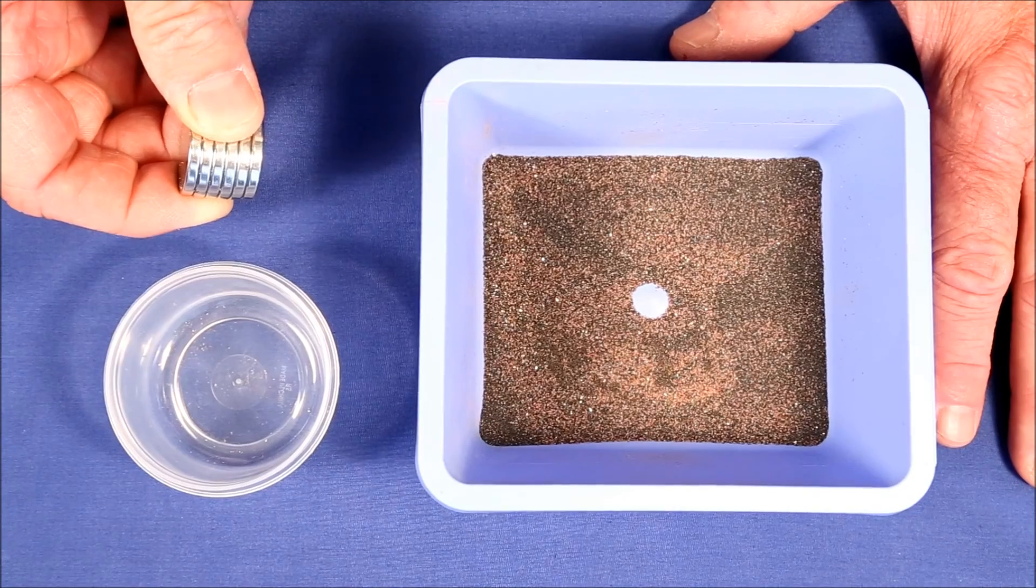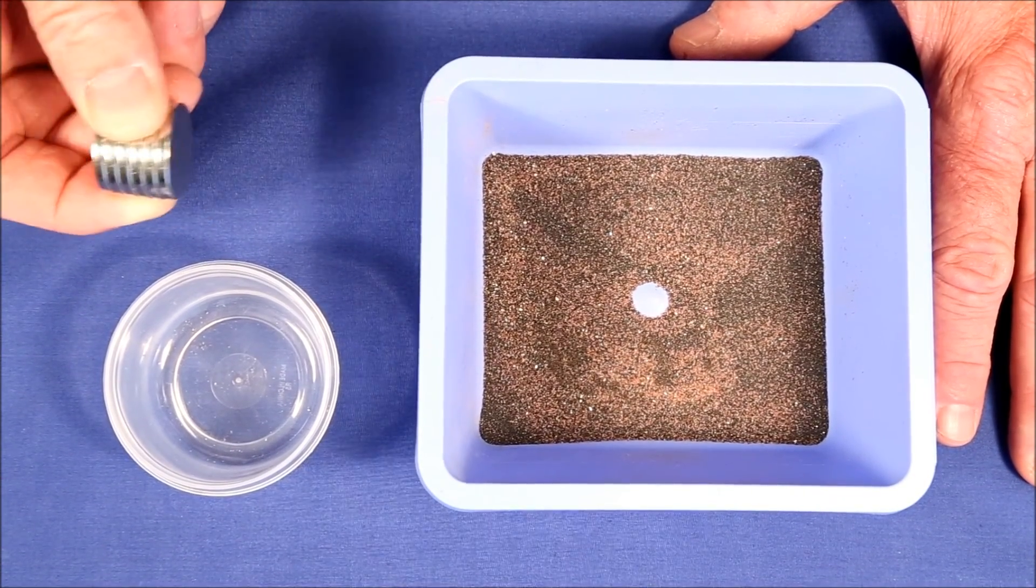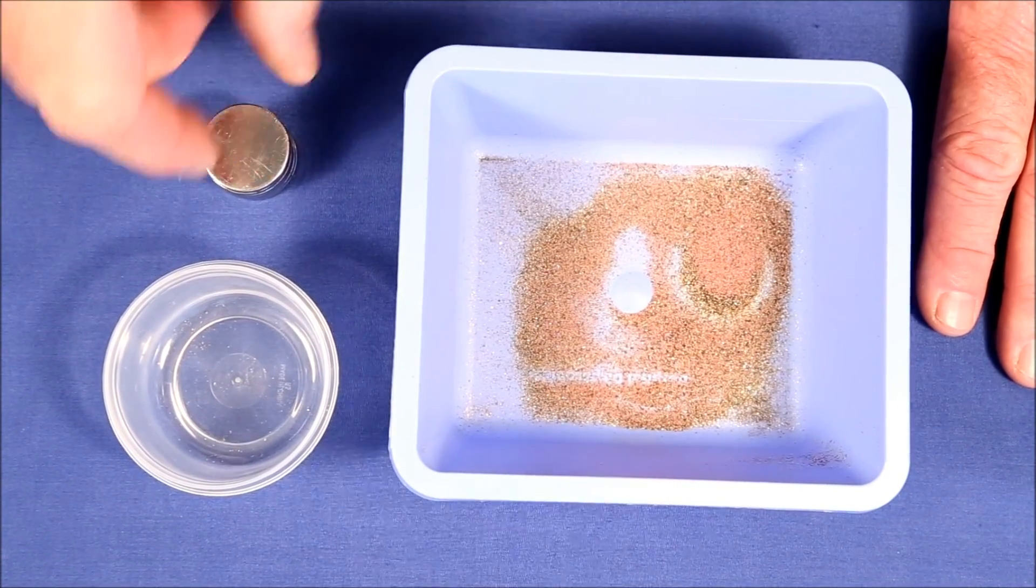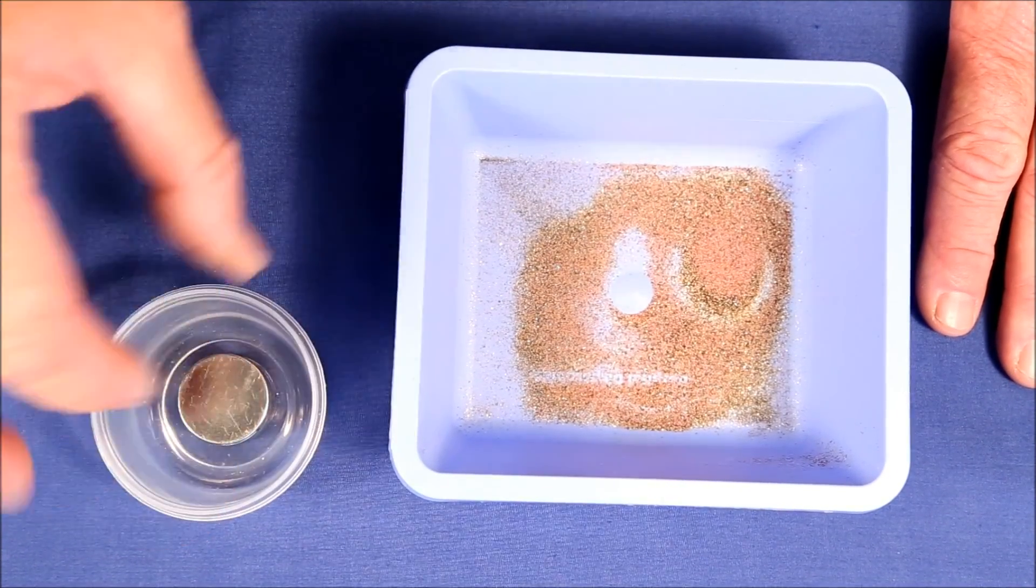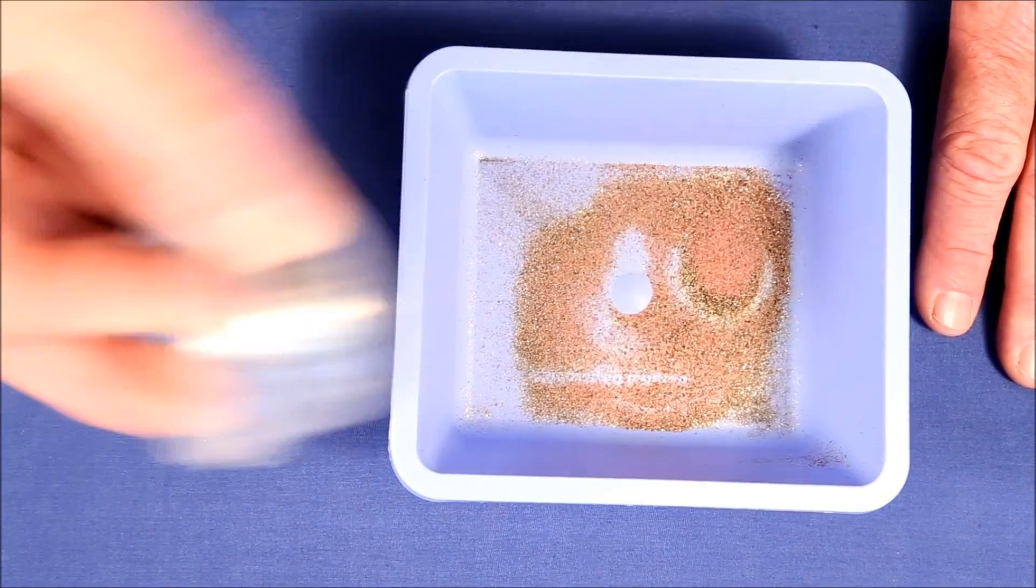I did not expect that garnet sand could be separated from blonde sands by using a magnet, but evidently it can. Here's some that I've purified out. I'm putting it on a plastic holder so that I don't mess up my magnets.